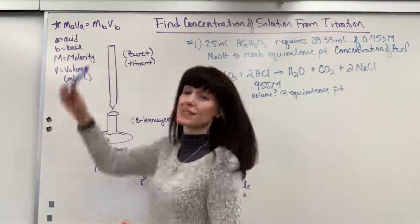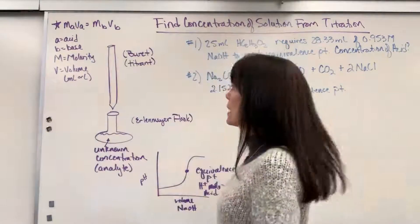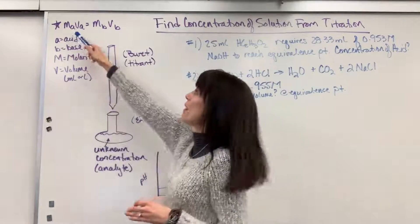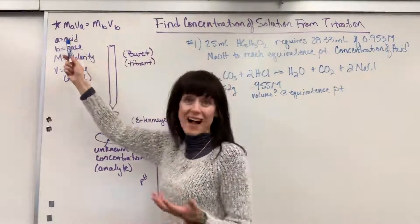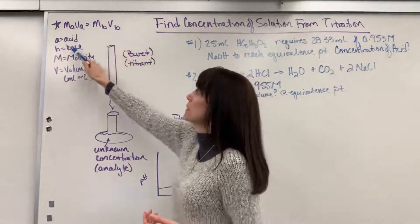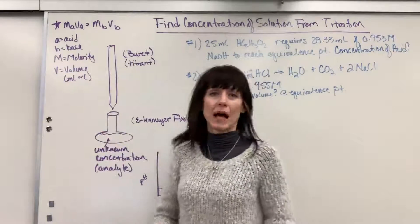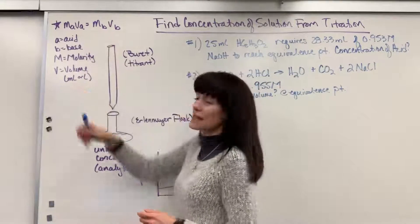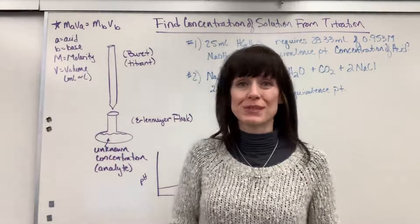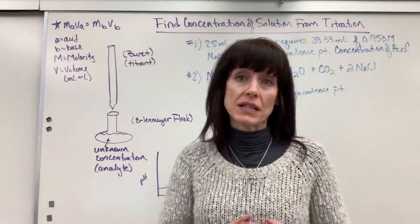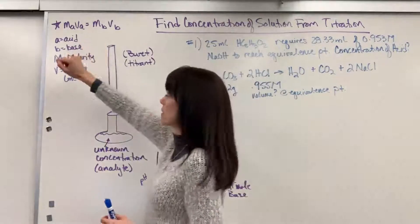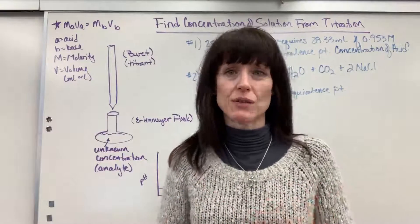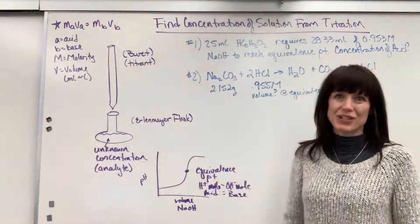There are two ways to do this. There's using this basic dilution formula. Notice I changed the M1V1 equals M2V2 to MAVA. The A stands for acid, equals MBVB. The B stands for base. Remember that capital M is molarity, moles per liter, and then V is volume. Because these are equal, the volumes cancel, so the volume can be either mils or liters.